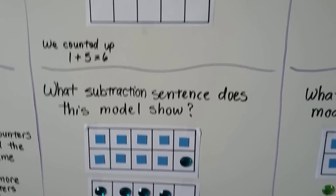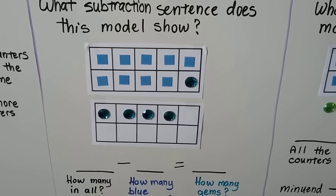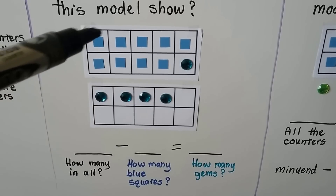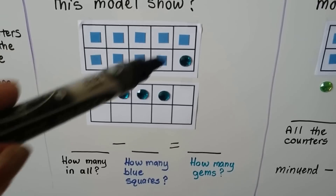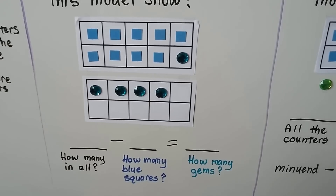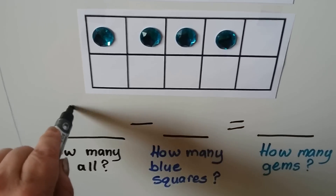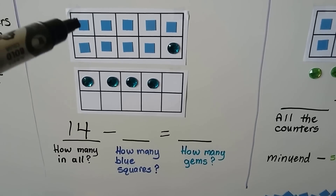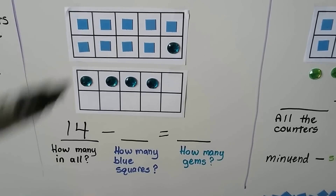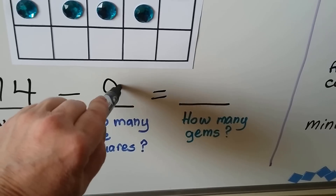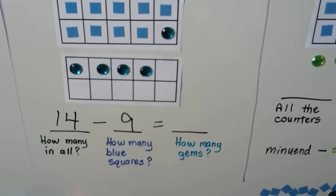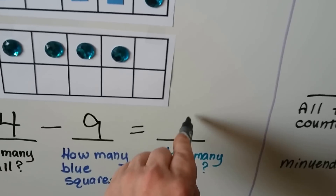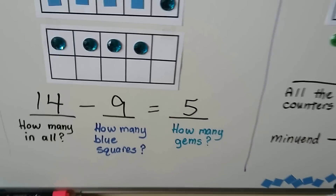Let's try another one: what subtraction sentence does this model show? We need to find how many in all. The 10 frame is full, so that's 10, eleven, twelve, thirteen, fourteen — there's 14 in all. How many blue squares? One through nine — nine blue squares. And how many gems? One through five. 14 minus 9 is equal to 5.